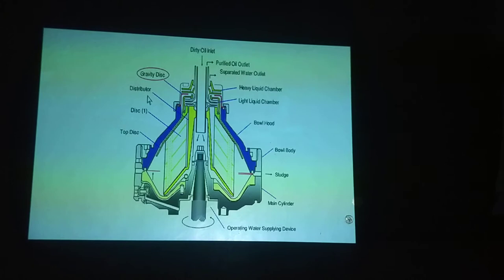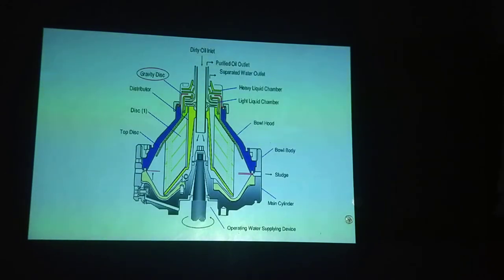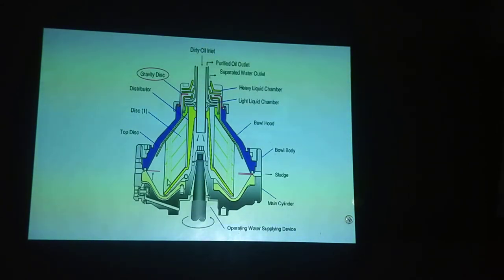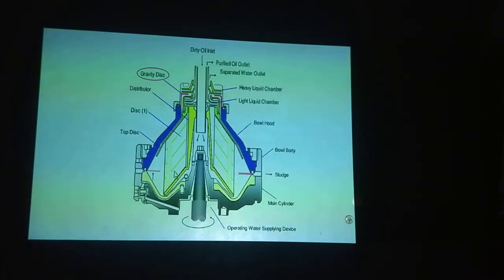The main function of the distributor — this is the distributor — is to make sure that the dirty oil coming in is distributed to the bottom of the cone. From the bottom of the cone, when the oil is distributed, it will slowly rise up and it will pass through the disc stack. As it passes through the disc stack, it will get purified and will pass upward.